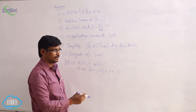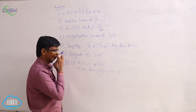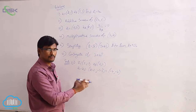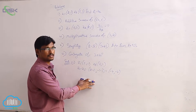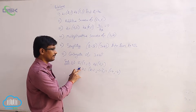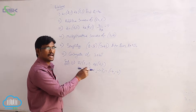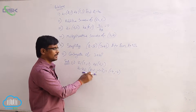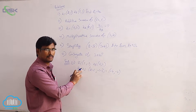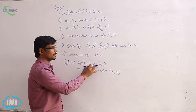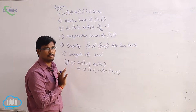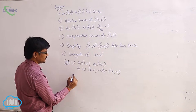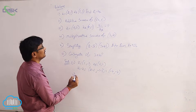When adding two complex numbers, just add the corresponding elements. When subtracting two complex numbers, just subtract the corresponding elements.